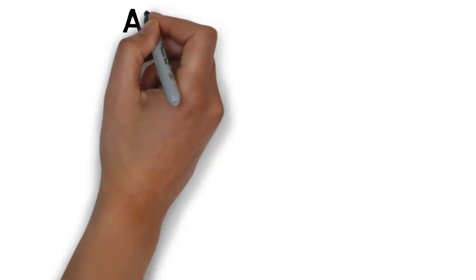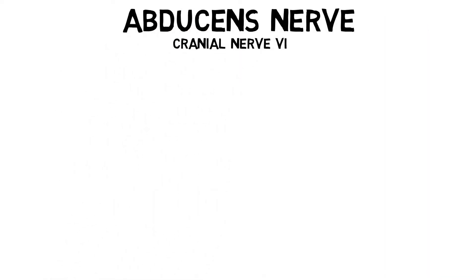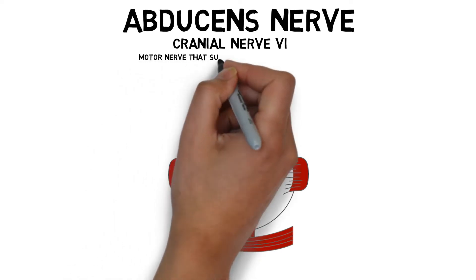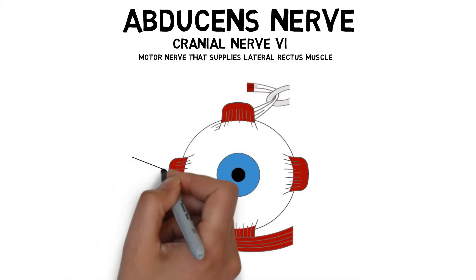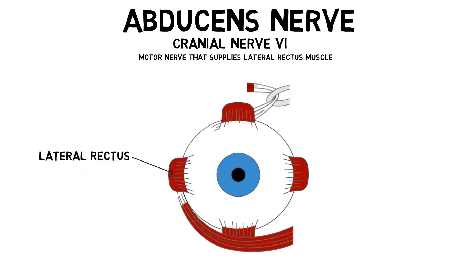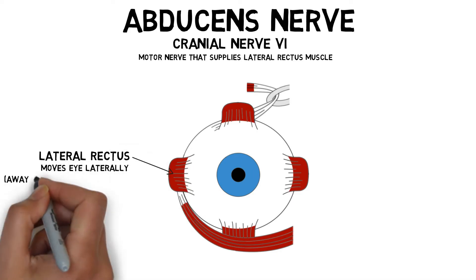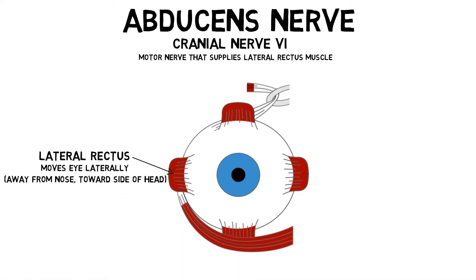The abducens nerve, also known as cranial nerve 6, is a motor nerve responsible for supplying one of the extraocular muscles of the eye, the lateral rectus muscle. The lateral rectus muscle abducts the eye, or moves it laterally toward the side of the head.